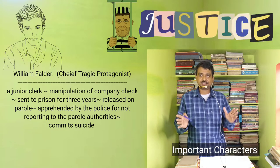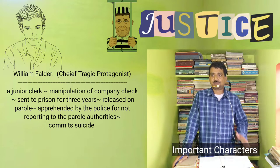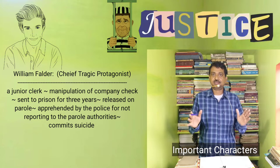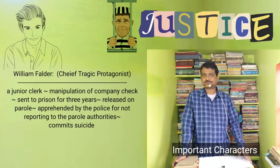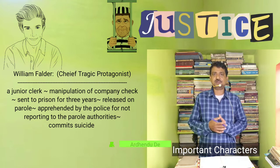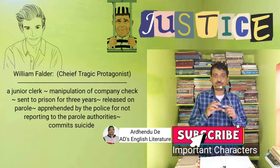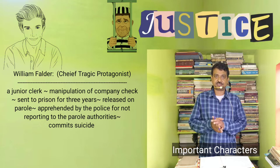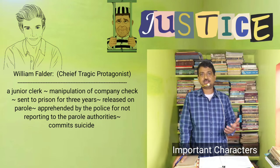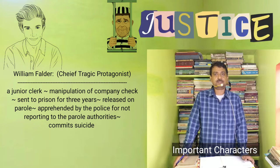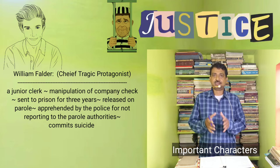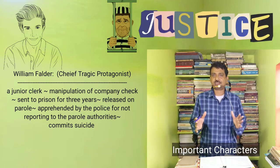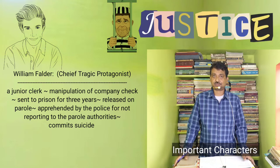First, we will meet the different characters and analyze how deeply they impact this drama. William Falder is a junior clerk in a law firm who raises a company cheque from 9 to 90 pounds and is sent to prison for three years. When released on parole, he is apprehended by the police for not reporting to the parole authorities. He breaks away from the arresting officer and kills himself by jumping from an office window.